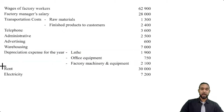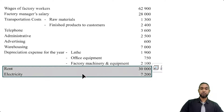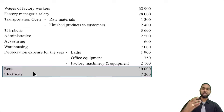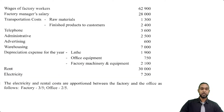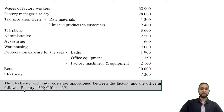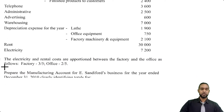We have rent and electricity — these are tricky ones that we have to split between the manufacturing and non-manufacturing aspects of the operation. There's a note: the electricity and rental costs are apportioned between the factory and the office as follows — factory gets three-fifths, office gets two-fifths.